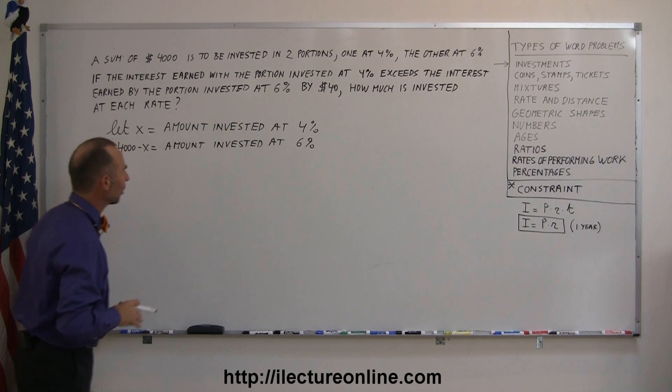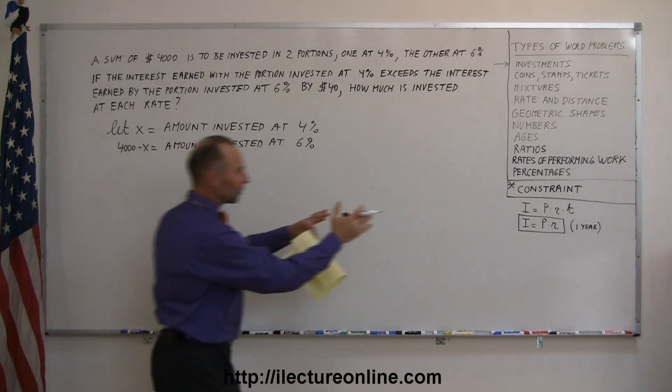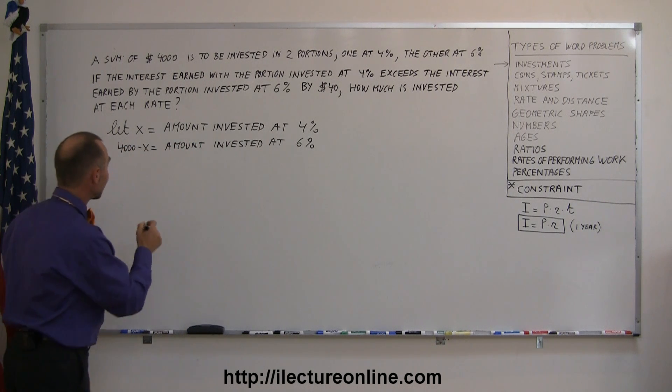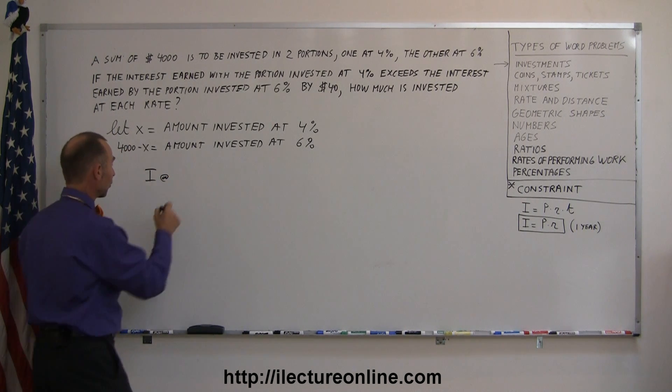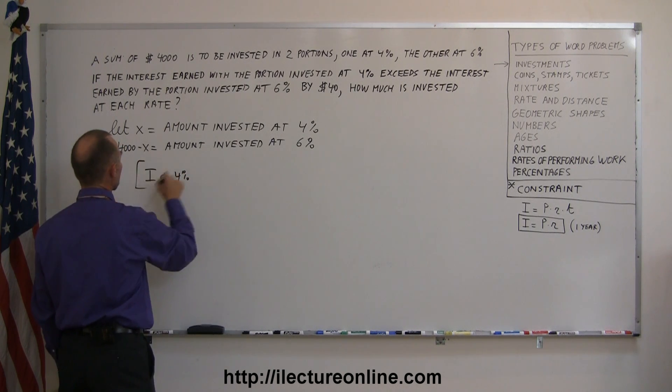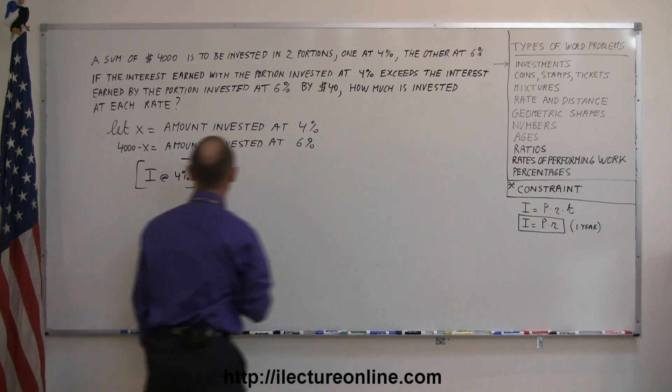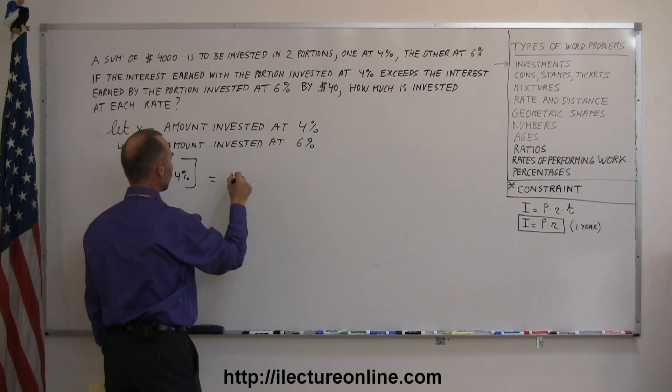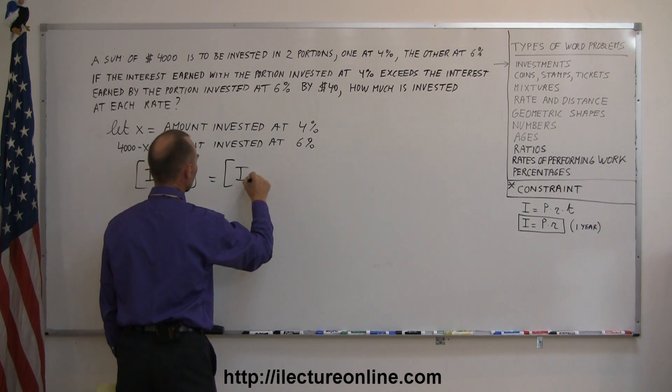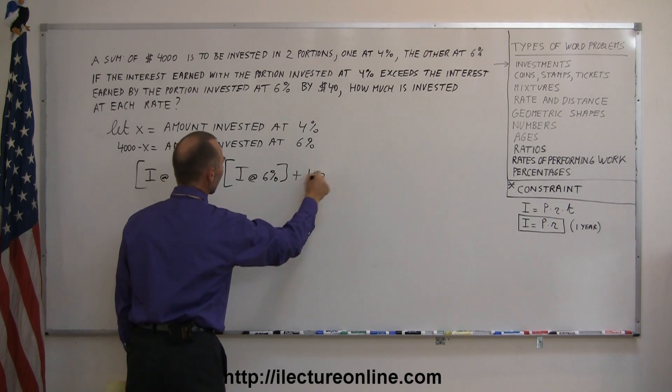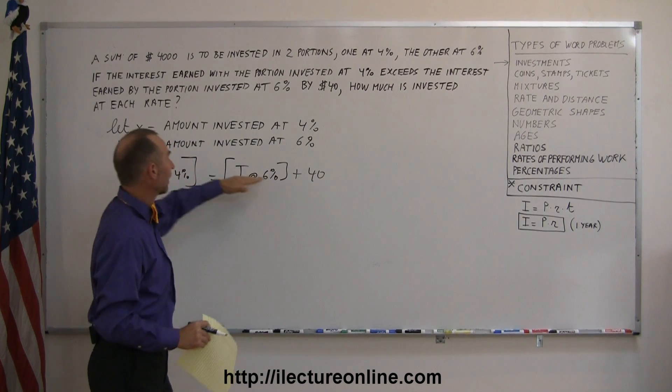Now all of a sudden the problem seems not so bad anymore. Now that we have carefully defined how much we invested at each rate, now we have to come up with an equation, a constraint. It says that the interest earned at 4% exceeds the interest earned by 6% by $40. So that means that the interest earned at 4% is equal to $40 more than the interest earned at 6%, so it's equal to the interest earned at 6% plus $40. There's my constraint.